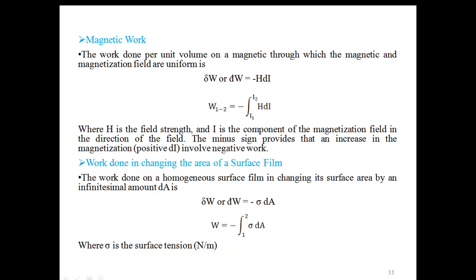Work done in changing the area of a surface film: the work done on a homogeneous surface film in changing its surface area by an infinitesimal amount dA is lowercase δW = −σ dA. So total work W12 = −integration of σ dA from 1 to 2, where σ is the surface tension in Newton per meter.